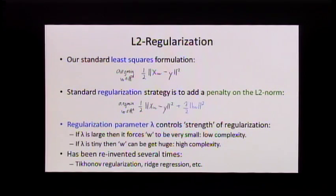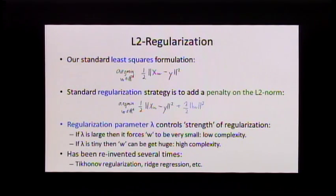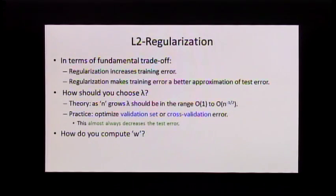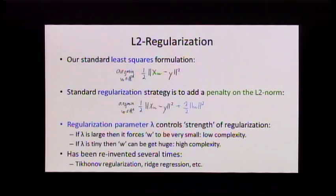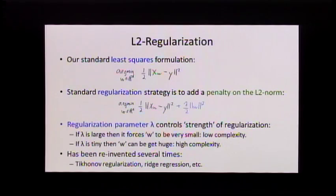This has been reinvented many times in many different areas. The geostatistics people claim to have had the oldest reference, possibly predating Tikhonov, but Tikhonov is the oldest one I know of. If this is the first time you see it, this should look really weird — it's a strange thing to do. What does the size of W have to do with overfitting? Even if this is the thousandth time you see this, I still want to emphasize it's a strange choice. This is not how you would explain to your mom how to combat overfitting.